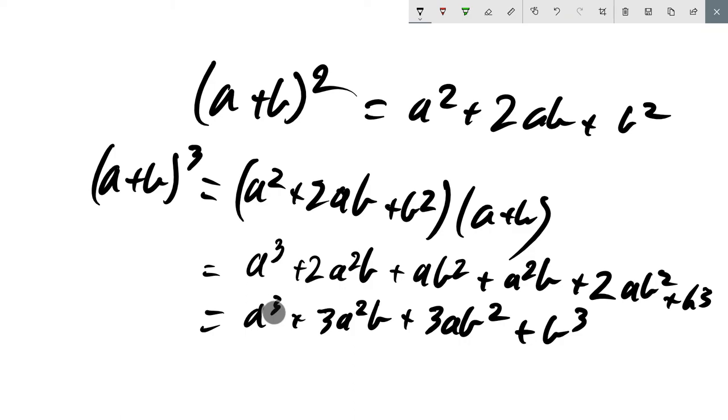I want to note the order. This a: power of 3, power of 2, power of 1, power of 0. B is going the other way: power of 0, 1, 2, 3. So that's a nifty way to remember what term is what.